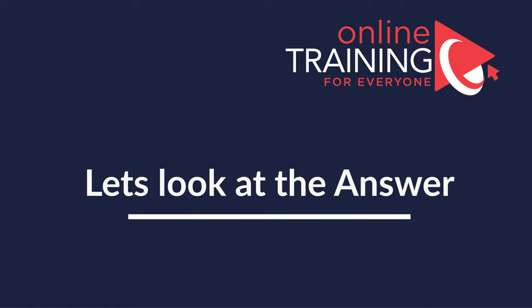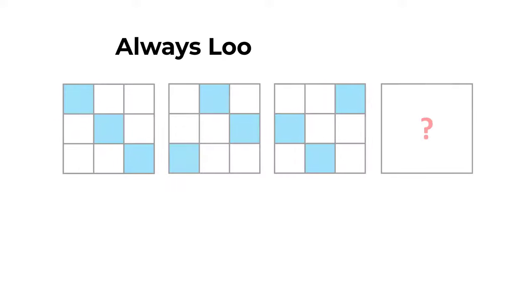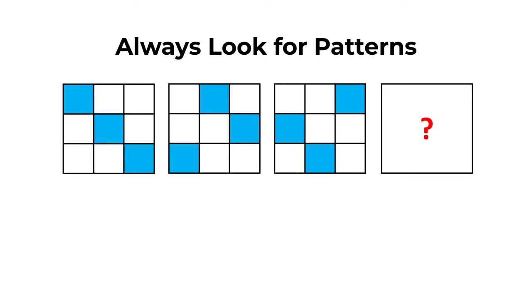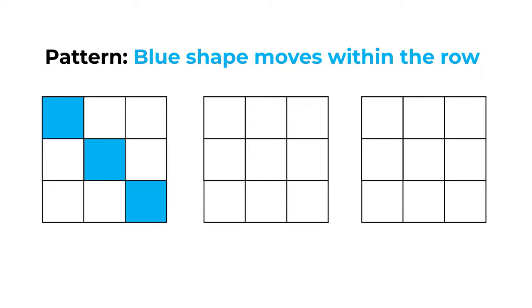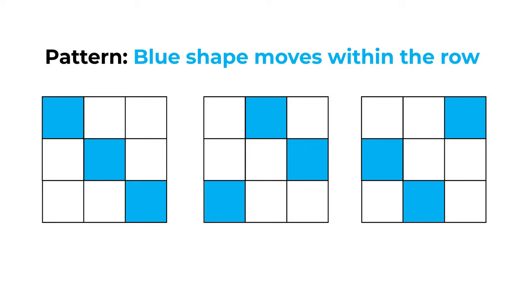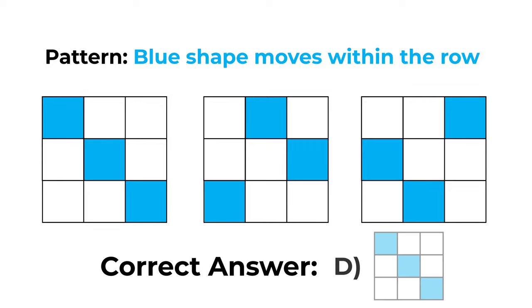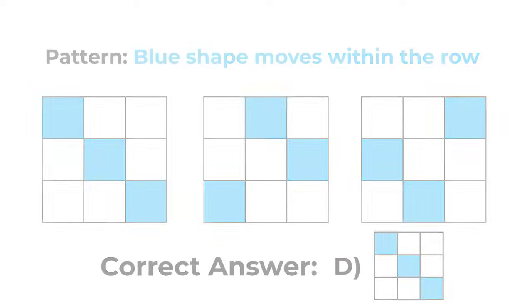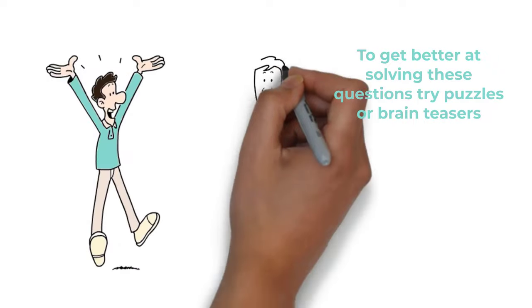Always look for patterns — that's the key. The blue shape moves within each row from left to right, one step at a time. Once it reaches the right end, it reappears on the left. So the correct answer is choice D.